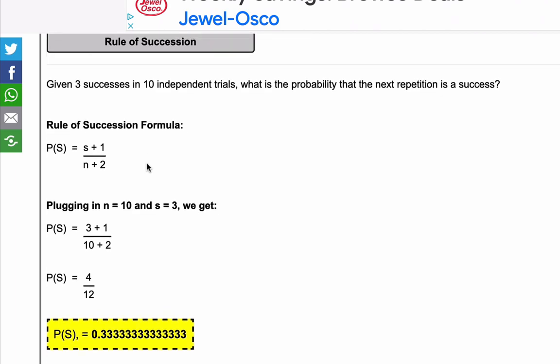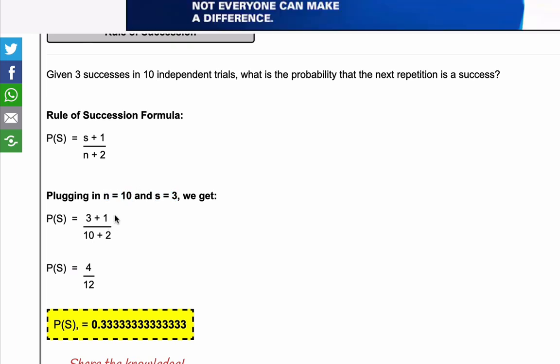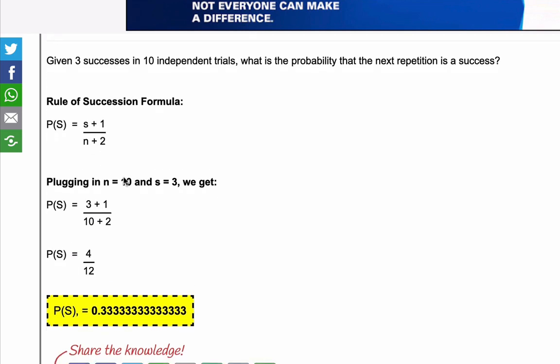And what the calculator's going to do is it's going to take what you plugged in for S, which was three in this case, what you plugged in for N, which was 10, and plug and chug into the Rule of Succession formula.